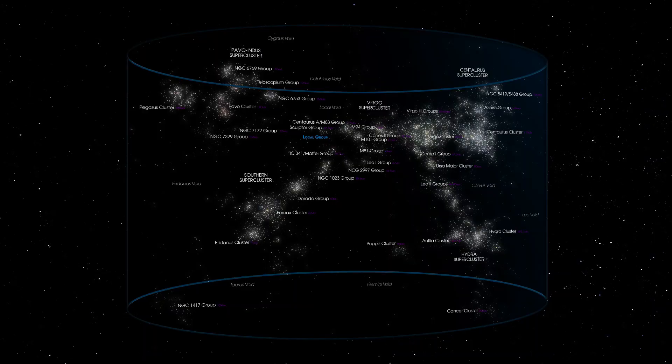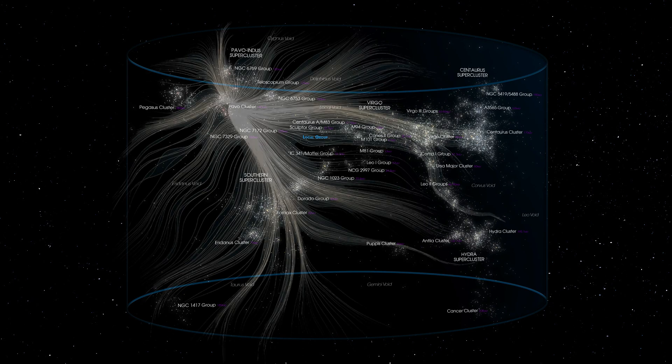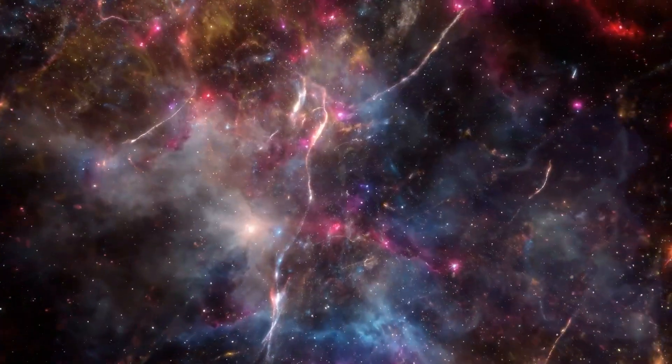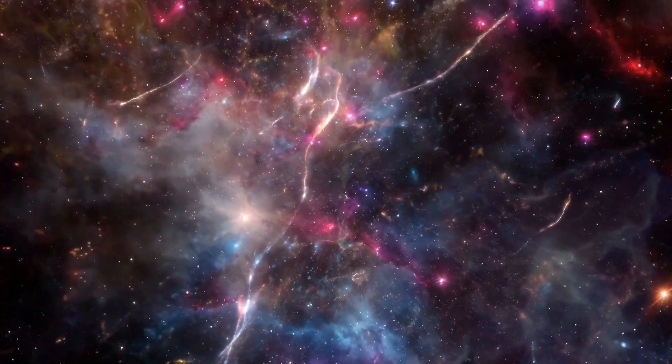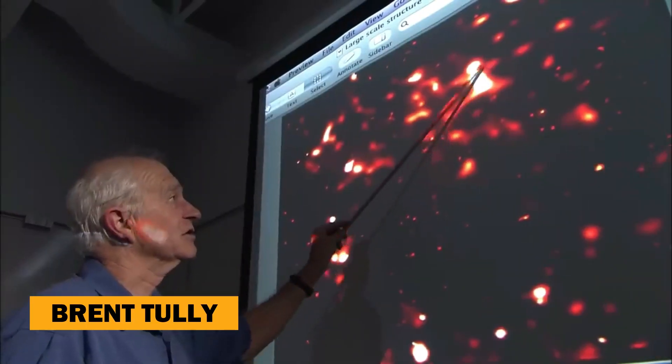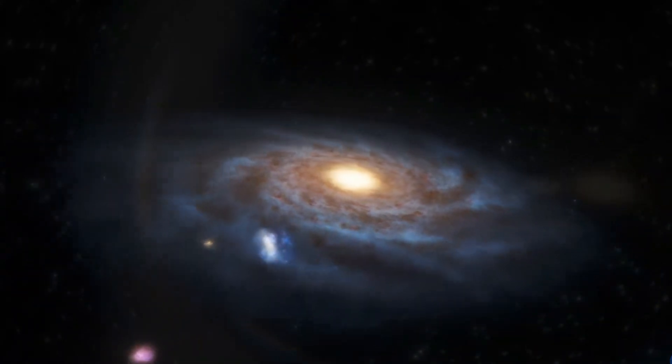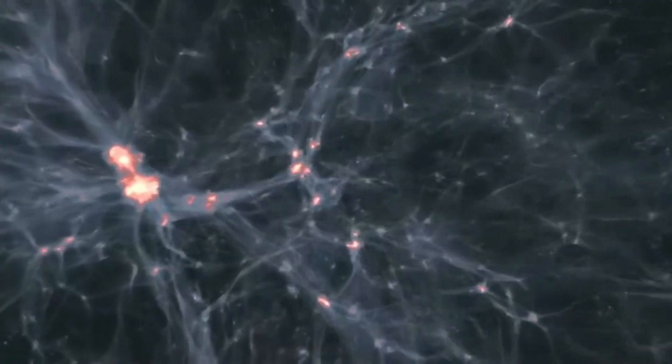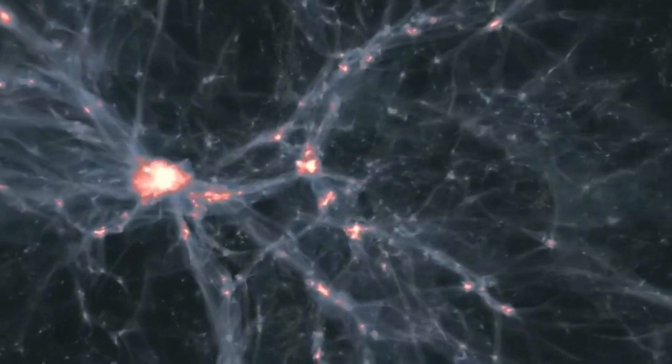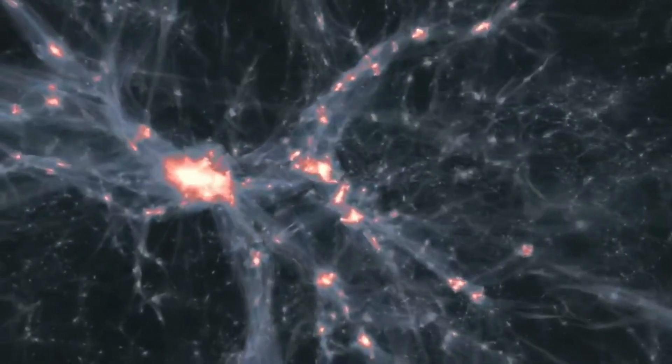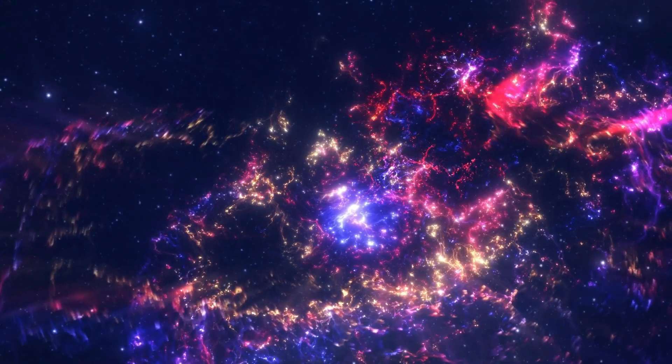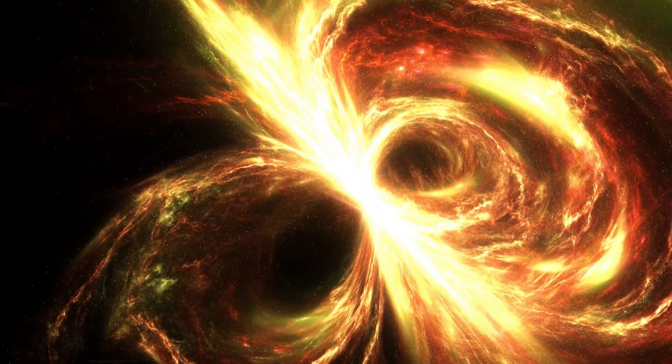For years, we believed the Milky Way was part of the Laniaki supercluster, a colossal structure spanning 500 million light years. However, recent research by the Cosmic Flows team, led by astronomer Brent Tully, revealed something extraordinary: the Milky Way might belong to an even larger basin of attraction. According to data from the Cosmic Flows Force Survey, which mapped the movement of 56,000 galaxies, this new basin, potentially centered around the Shapley supercluster, could be 10 times the volume of Laniaki.